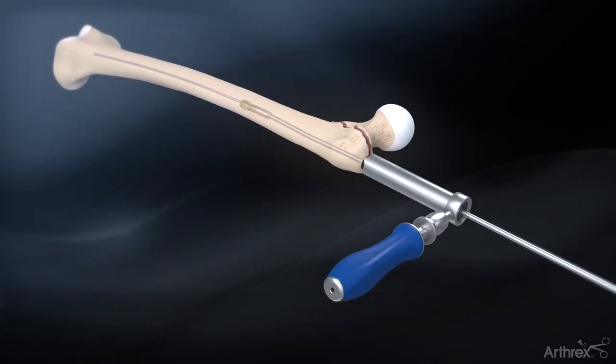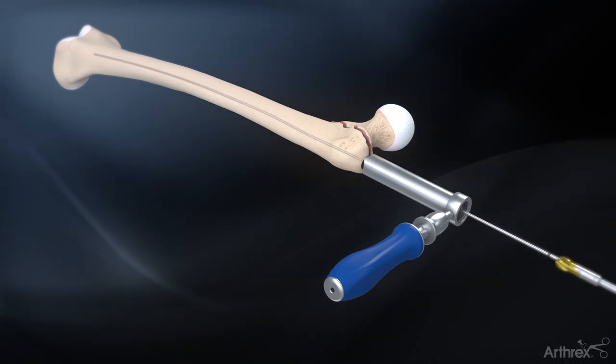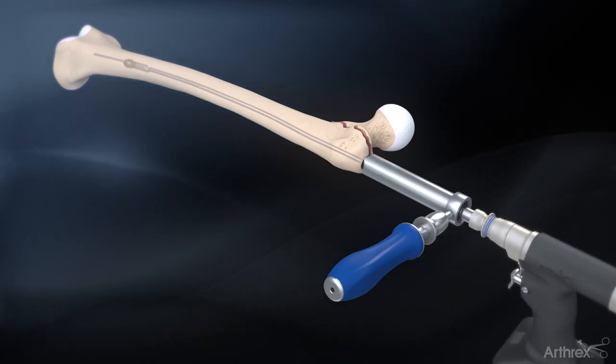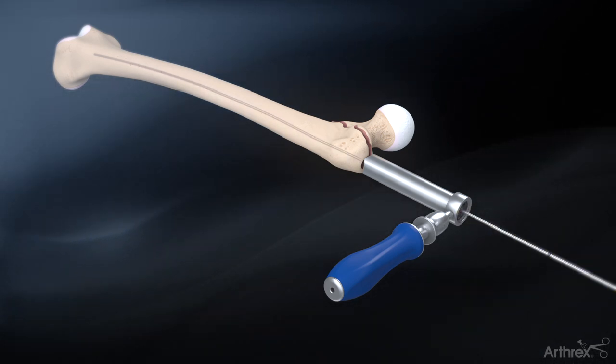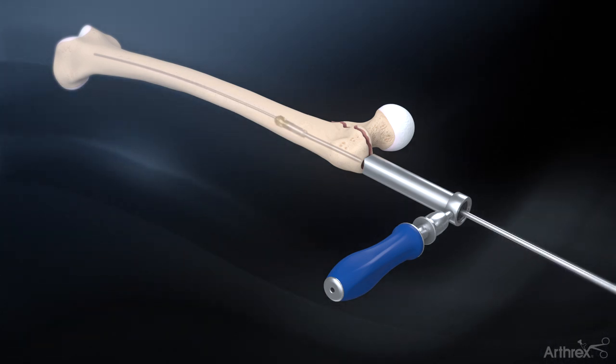Begin reaming with the 8 mm end cutting reamer over the ball nose guide wire. Sequentially ream larger with the side cutting reamers until cortical chatter is achieved. It is recommended to ream at least 1.0 to 1.5 mm over the desired nail diameter.